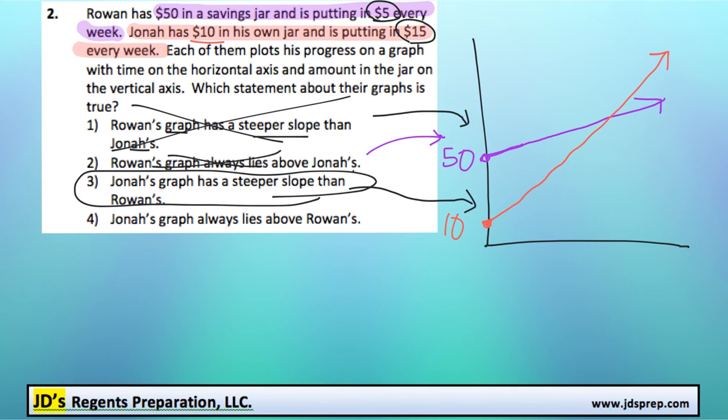And out of curiosity, the fourth one is that Jonah's graph always lies above Rowan's. And that's definitely not true because right off the bat, Jonah's is not above Rowan's. So that's definitely not true.